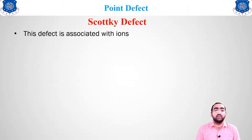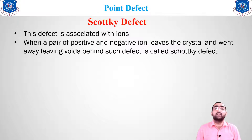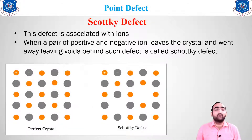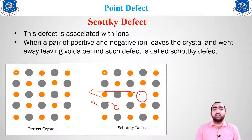Schottky defect is associated with ions. When a pair of positive and negative ions leaves the space of the crystal and goes away, leaving behind vacant spaces, that type of defect is known as a Schottky defect. In a perfect crystal there are alternating plus and minus ions (cations and anions), but in Schottky defect one positive and one negative ion leave their positions, creating vacancies in the crystal.